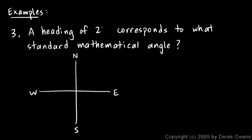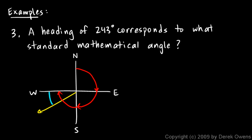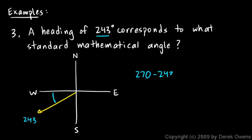For Example 3: a heading of 243 degrees corresponds to what standard mathematical angle? 243 degrees clockwise from north lands about here. Counting by 90s: 90, 180, 270 — directly west is 270 degrees. Since 243 stops just short of 270, the reference angle is 270 minus 243, which is 27 degrees.